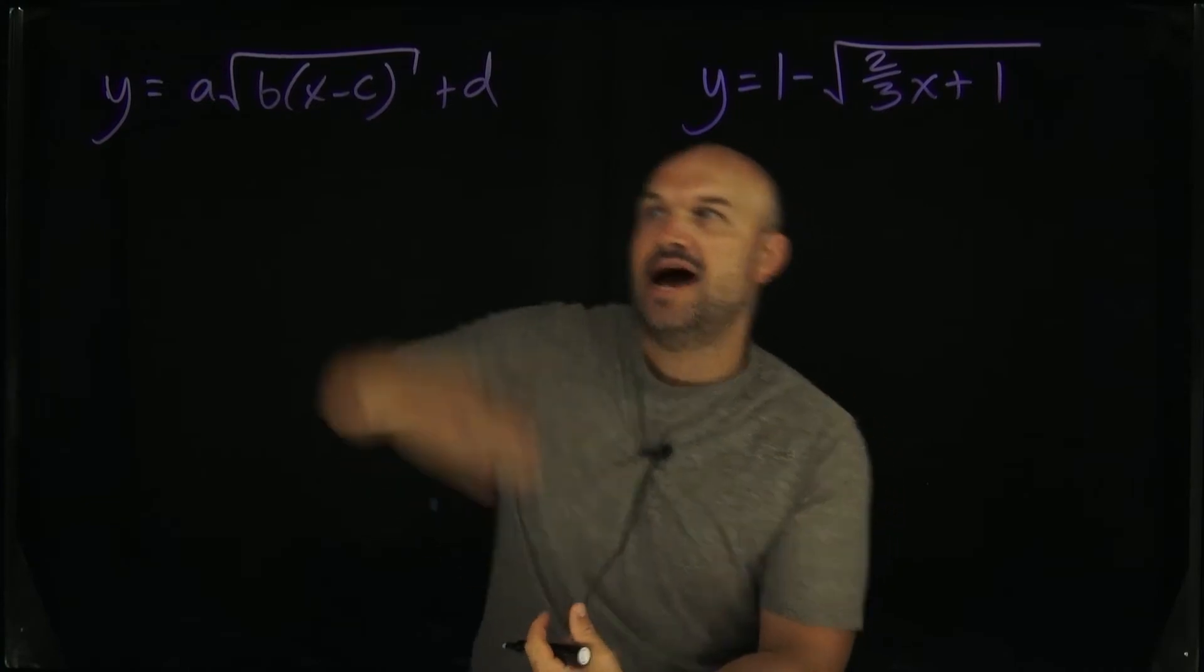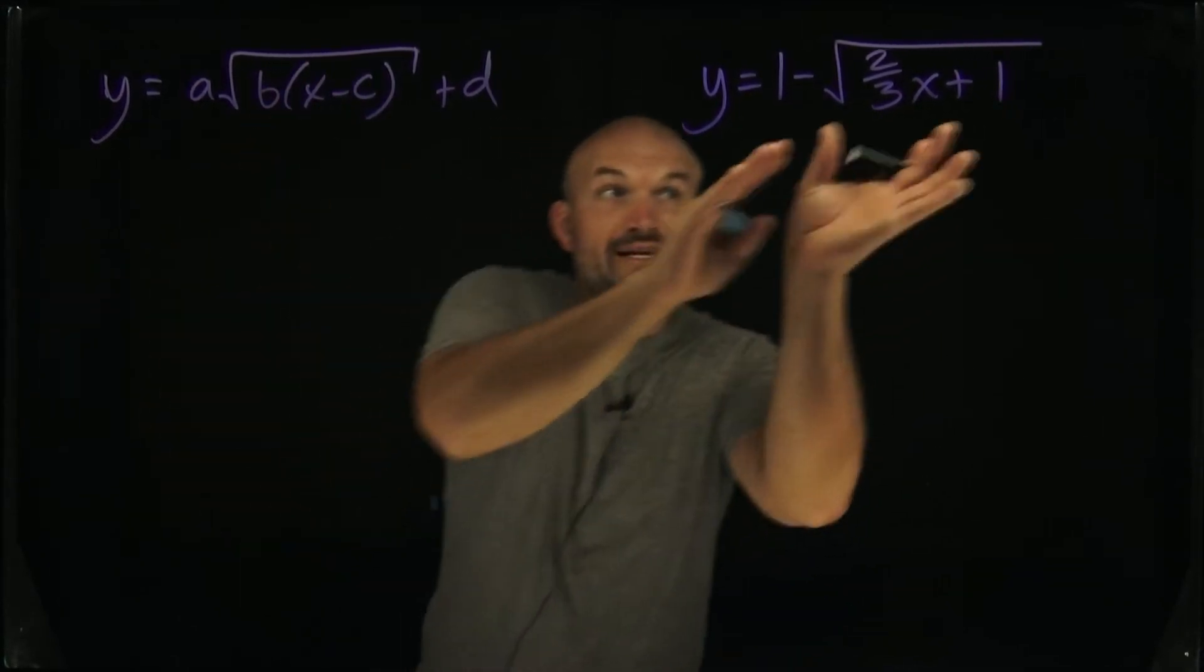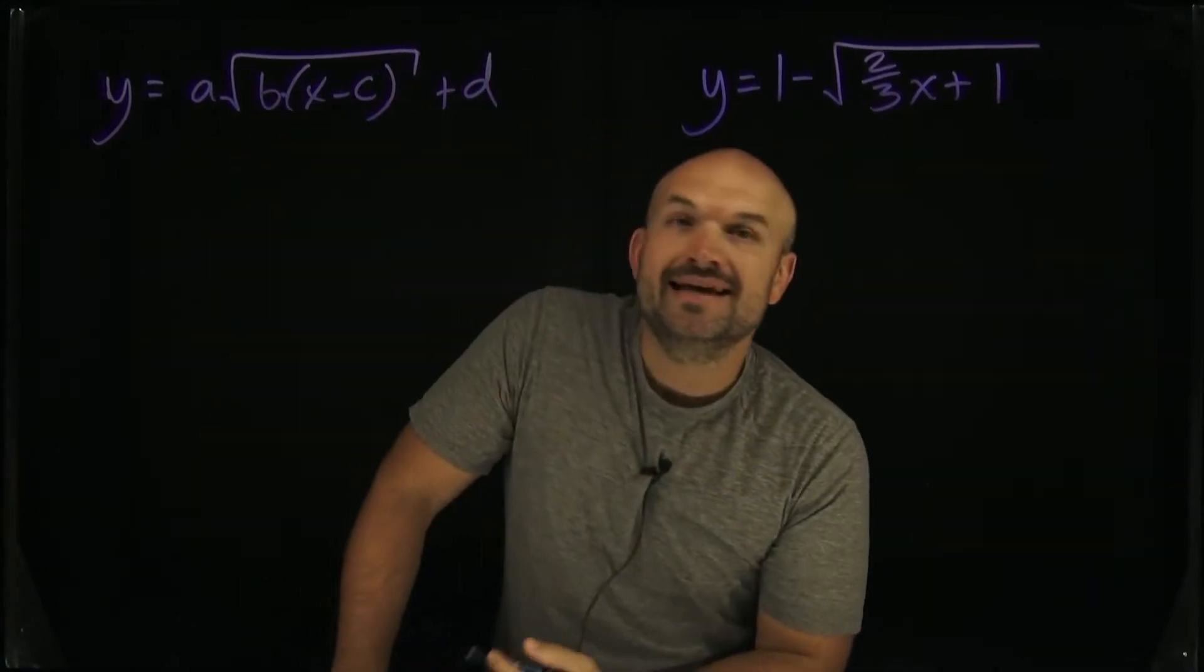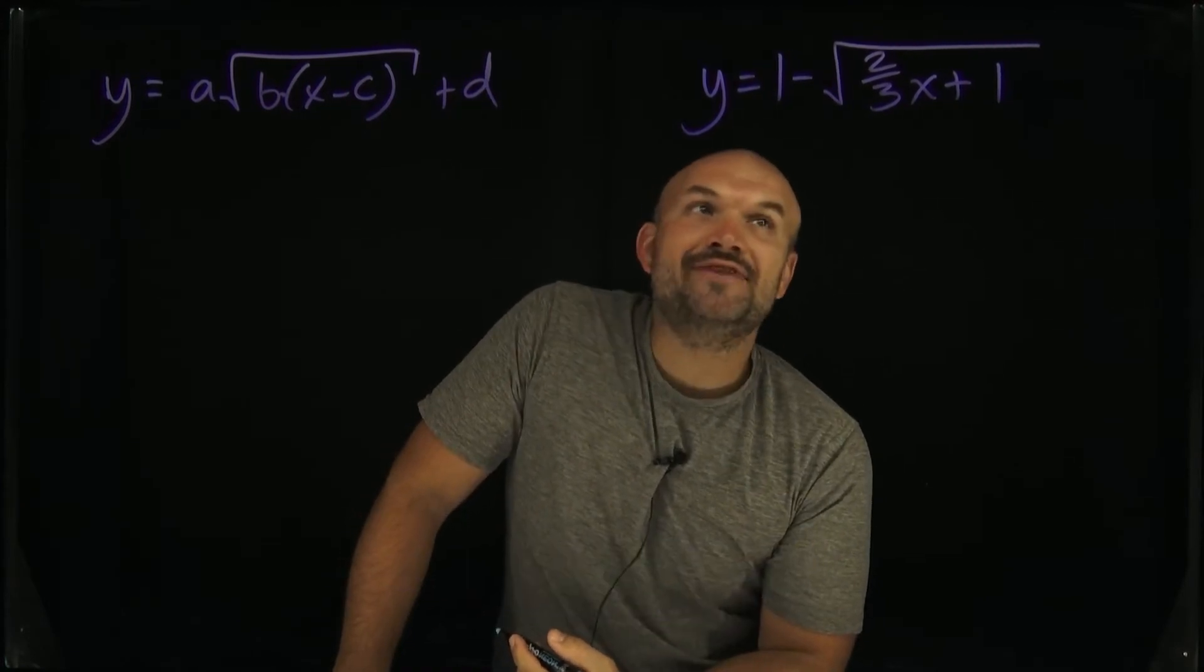And so what we need to do, the most common way to be able to factor it out or to rewrite an expression as a product multiplying is to factor. How do you factor out a two-thirds?